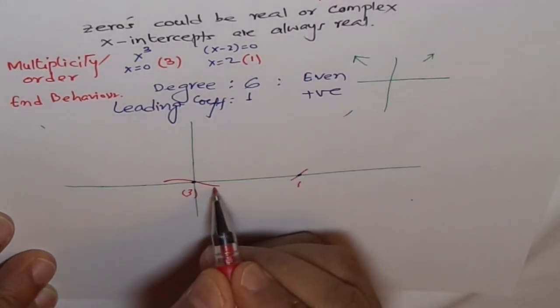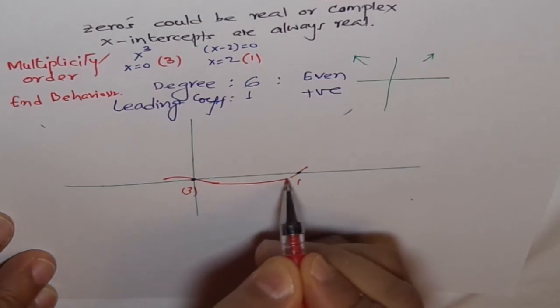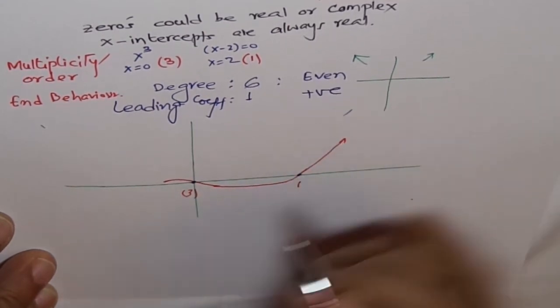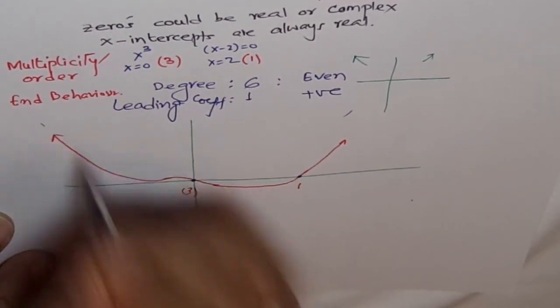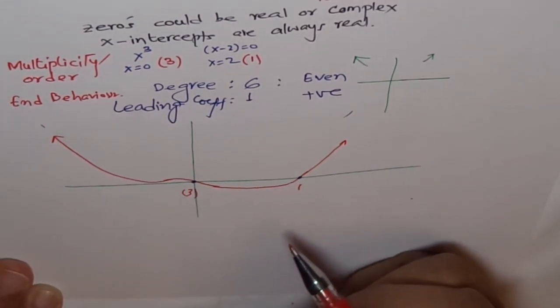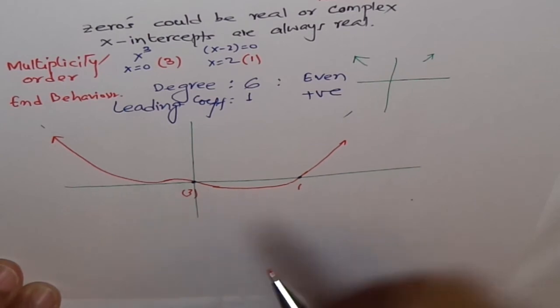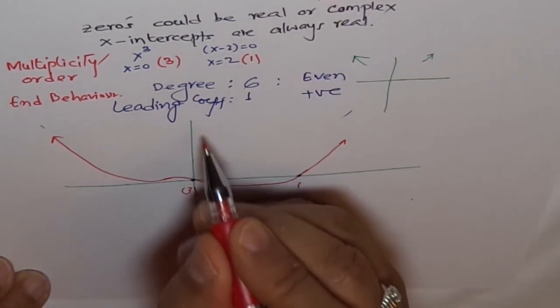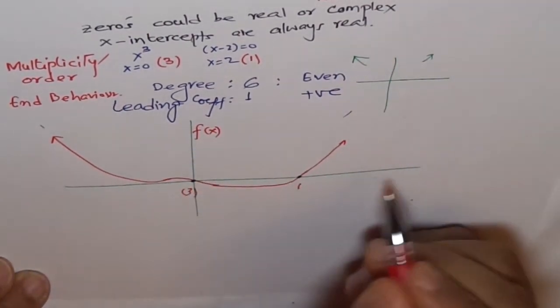So if I join these points, I get my graph. Do you see that? That's my polynomial sketch which represents this function f(x).